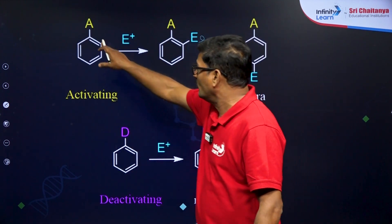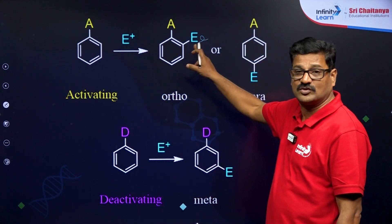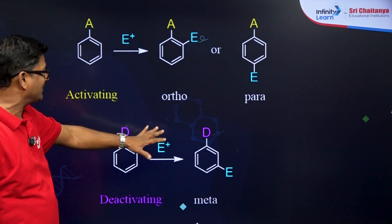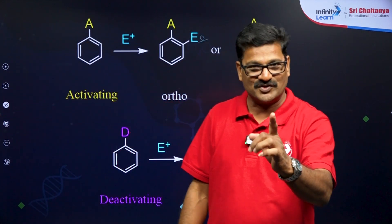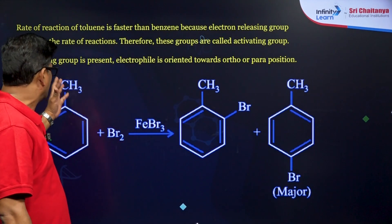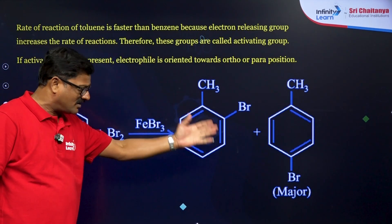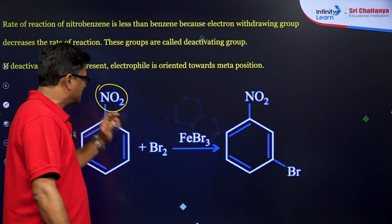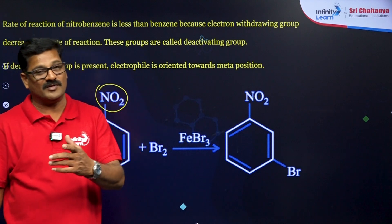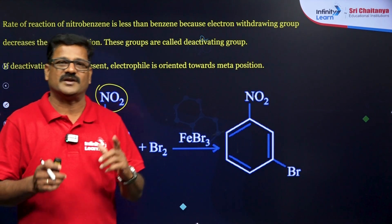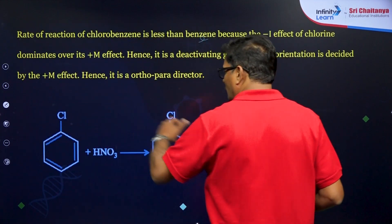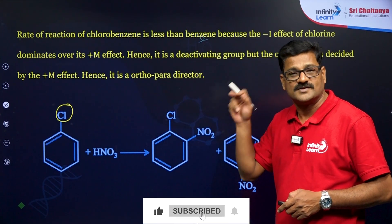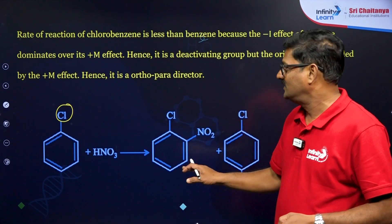Let's take an example. If the group is activating, the electrophile will attack at the ortho and para position. If the group is deactivating, the electrophile attacks at the meta position. For example, toluene when brominated — the methyl group is activating — gives ortho and para products, with para being the major product due to less steric repulsion. Nitrobenzene with bromine gives meta-bromo derivatives since the nitro group is deactivating. For chlorobenzene with HNO3, although chlorine is ring deactivating, it is an ortho and para director due to its weak positive mesomeric effect — an exception in organic chemistry.